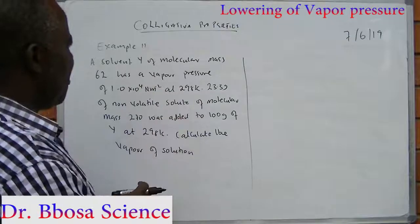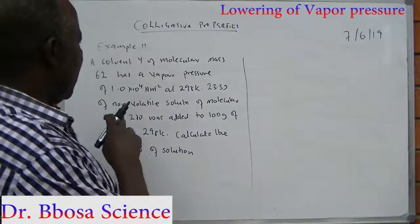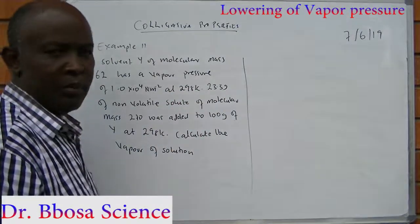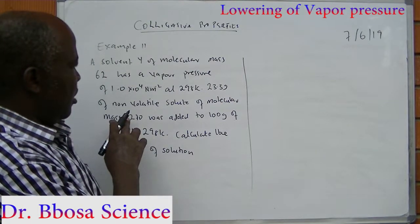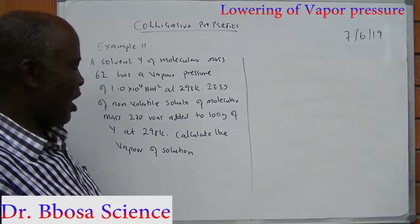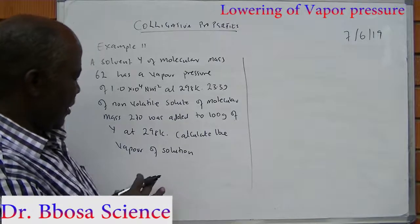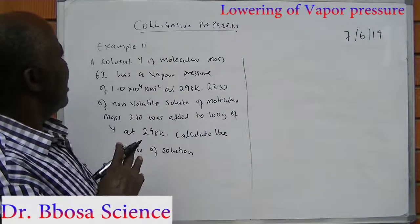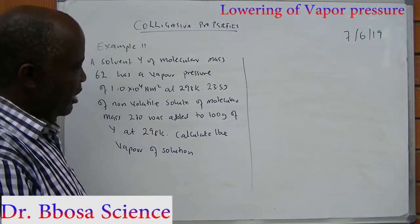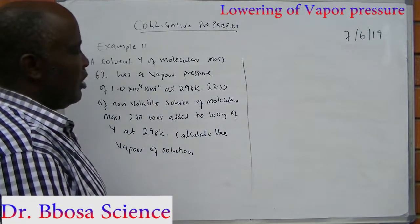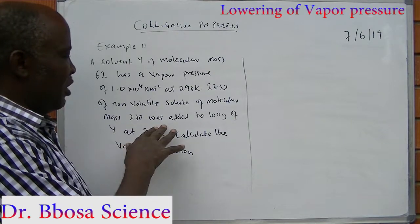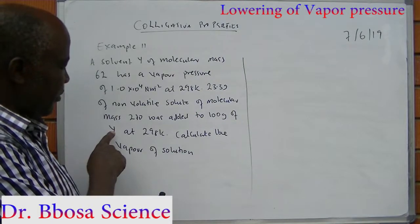Example 2: A solvent Y with molecular mass 62 has a vapor pressure of 10 to the power 4 N per meter squared at 298 K. 23.3 grams of a non-volatile solute of molecular mass 270 was added to 100 grams of Y at 298 K. Find the vapor pressure of the solution.